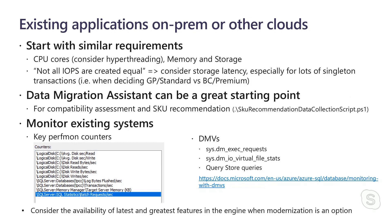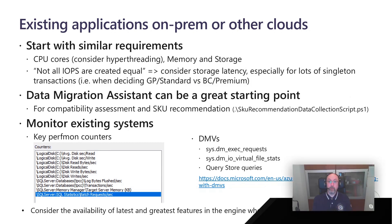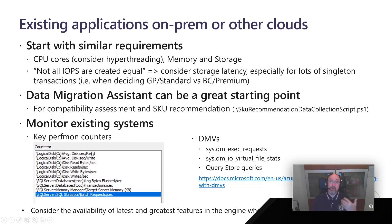We have a tool called Data Migration Assistant that you can download from the Microsoft website, which helps recommend what compute size level you need based on recording some of the performance counters in your system. Those performance counters are also listed in this slide. Those are the key information you need in order to estimate your IOPS — IO operations per second — your log throughput, which is the log bytes flush per second counter in your Perfmon system on-prem. Starting from collecting this information, you will be able to understand what you will need in Azure SQL Database in terms of planning.